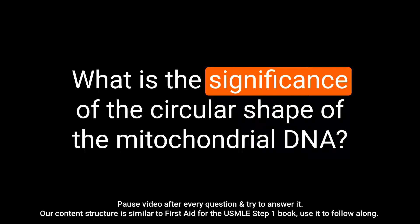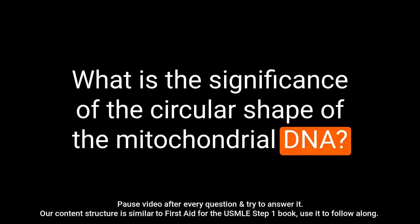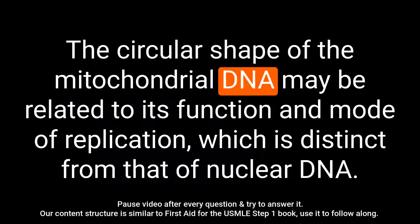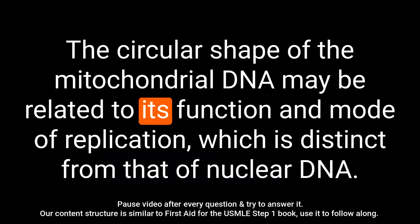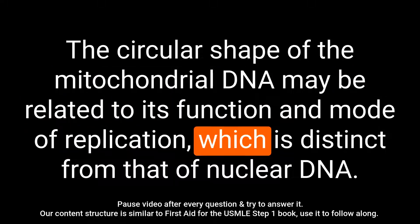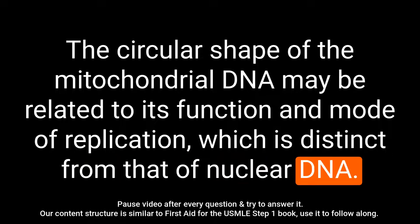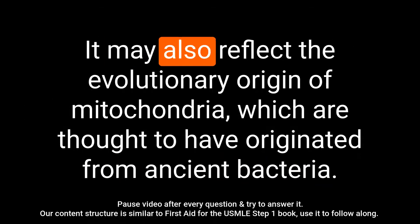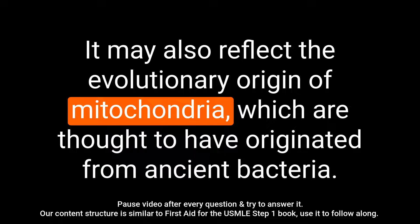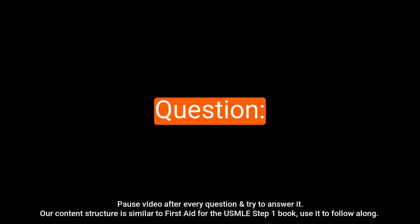Question: What is the significance of the circular shape of the mitochondrial DNA? Answer: The circular shape of the mitochondrial DNA may be related to its function and mode of replication, which is distinct from that of nuclear DNA. It may also reflect the evolutionary origin of mitochondria, which are thought to have originated from ancient bacteria.